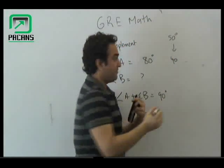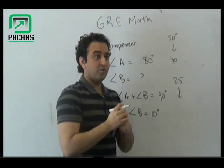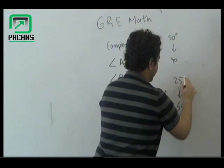If they give you 25 and they ask you what would be the measure of the complement, it would be 25 and 65, so the complement would be of 65 degrees, okay?